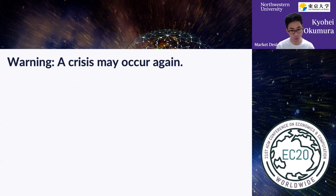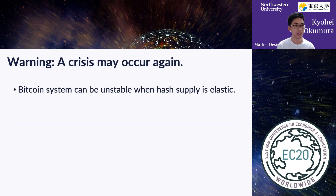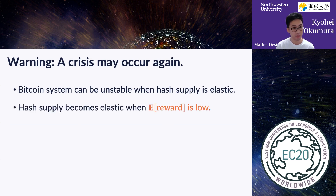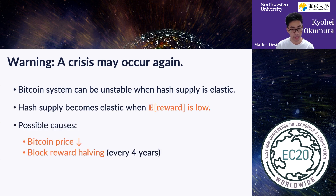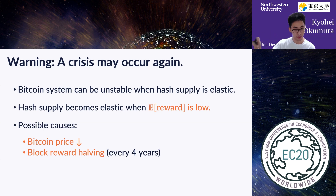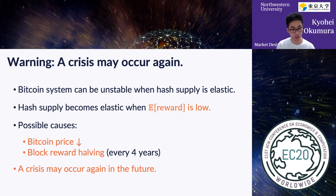Now let me give you a warning: such a crisis may occur again in the future. We have seen that the Bitcoin system can be unstable when hash supply is elastic, and hash supply becomes elastic when the expected reward is low. This is possible when, for example, Bitcoin price decreases. Because the Bitcoin price is highly volatile and unpredictable, we cannot say the price will remain high forever — meaning a crisis may occur in the future, and we should change the current DAA to prepare for it.